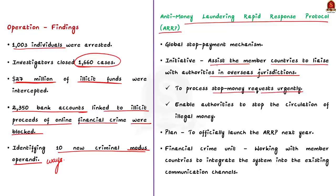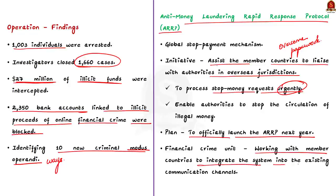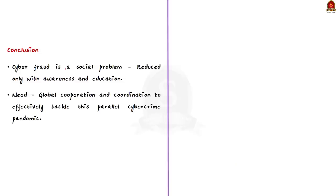This protocol will enable authorities to stop the circulation of illegal money. To overcome the huge procedures and paperwork involved in stopping illegal money processing in overseas jurisdictions, this stop payment mechanism was tested so that requests can be processed quickly. Interpol plans to officially launch the ARRP next year and its financial crime unit is currently working with member countries to integrate the system into existing communication channels. To conclude, cyber fraud is a social problem that can be reduced only with awareness and education, and it needs global cooperation and coordination to effectively tackle this parallel cybercrime pandemic.